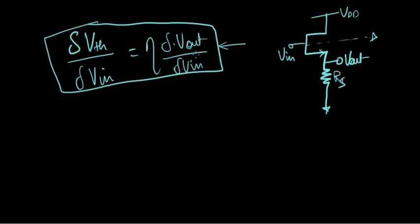First of all, we know we have the general current equation. Some of the facts I talk about today might seem redundant, but just bear with me. Half mu_n C_ox W over L times Vgs minus Vth, the whole square, right?